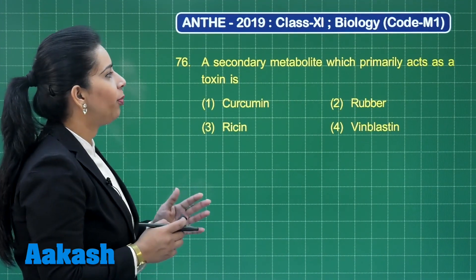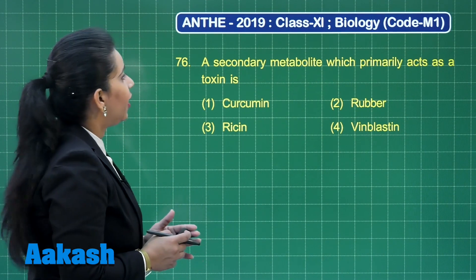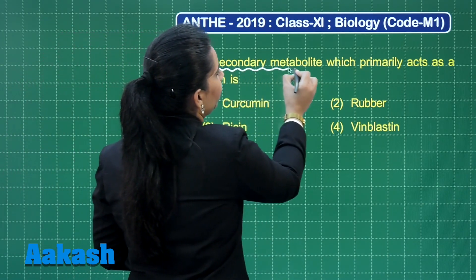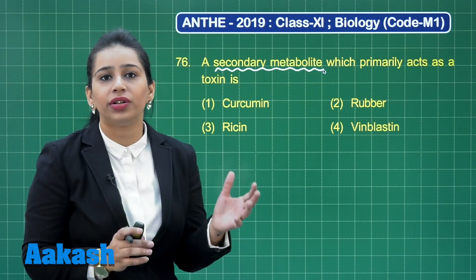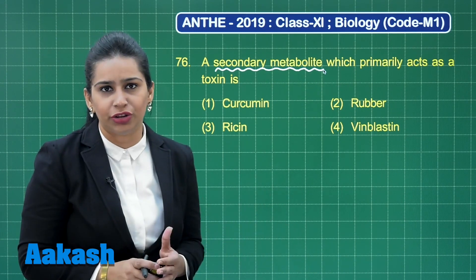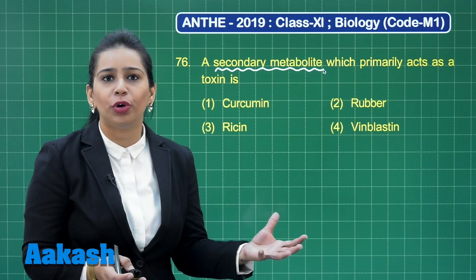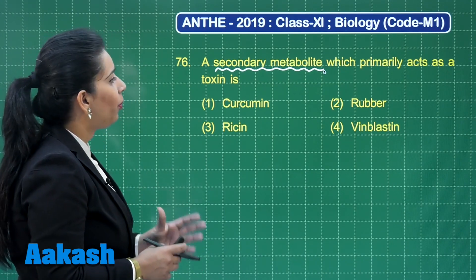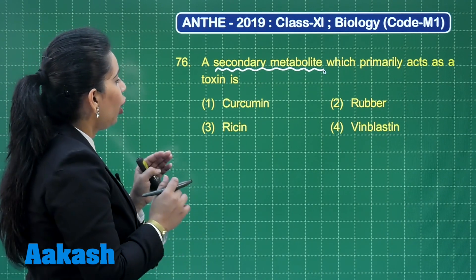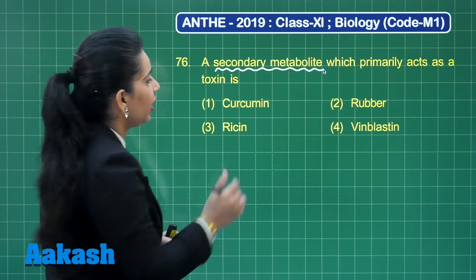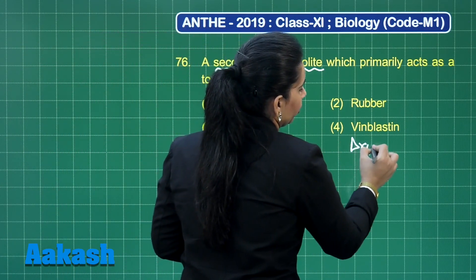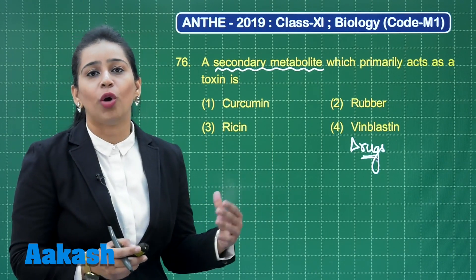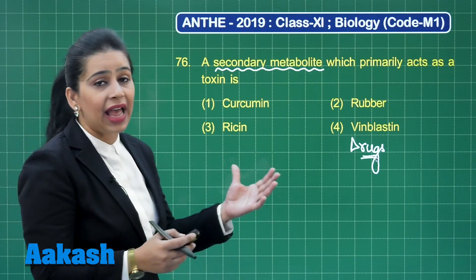The next question is from the chapter biomolecules: a secondary metabolite which primarily acts as a toxin. Secondary metabolites are those which are not synthesized by most plants; they are synthesized by a few producers or are derivatives of primary metabolites. The four options are curcumin, rubber, ricin, and vinblastin. Curcumin and vinblastin are actually drugs — curcumin is an active ingredient of turmeric, and vinblastin is obtained from the plant Catharanthus roseus and is an anti-cancer drug.